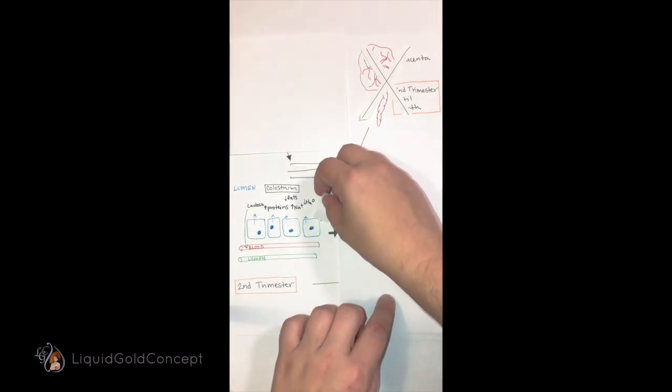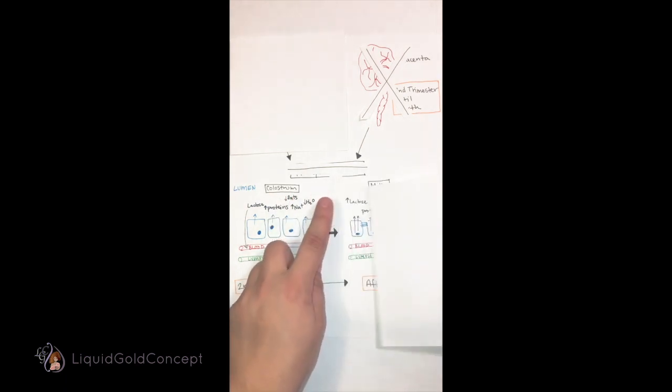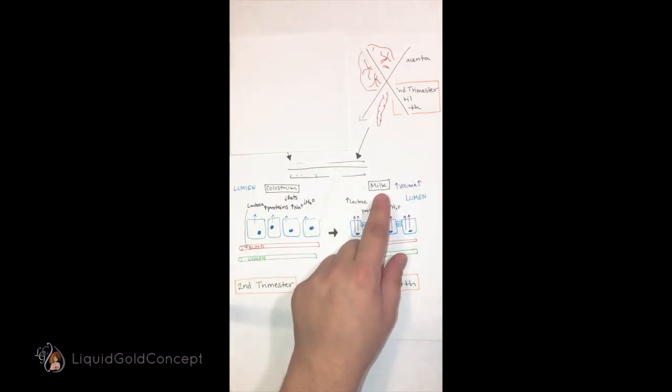This is the main signal for the transition from colostrum to milk: the fall in the concentration of that hormone, progesterone.